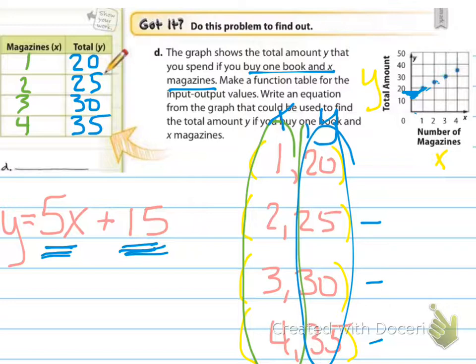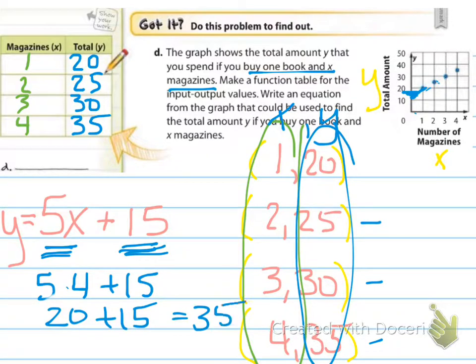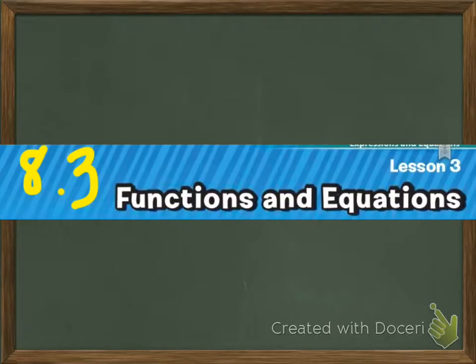If I plug in these values, and it should work for every one of them, 5 times, let's say, 3 magazines plus 15. This is going to be $15 plus $15 for the book, which equals $30, and that's exactly what I have here. You can try it with another one. We've got 5 times 4 magazines. That's $20 on magazines, $15 on a book, a total spending of $35, and that would be correct as well. You should be able to use it with every single one of these, and it will work. That's why it's a function rule because it will work every time. That concludes our 8.3 functions and equations. If you have any questions, make sure you bring them to me tomorrow at school or when we do see each other again at school. Thank you.